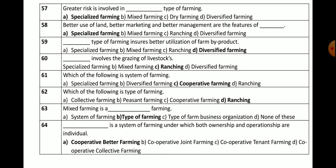Question number 59: Which type of farming ensures better utilization of farm by-products? The correct answer is diversified farming — diversified farming ensures better utilization of farm by-products.